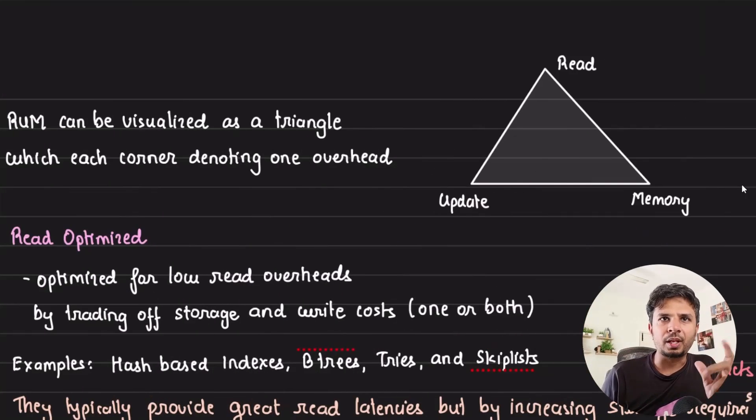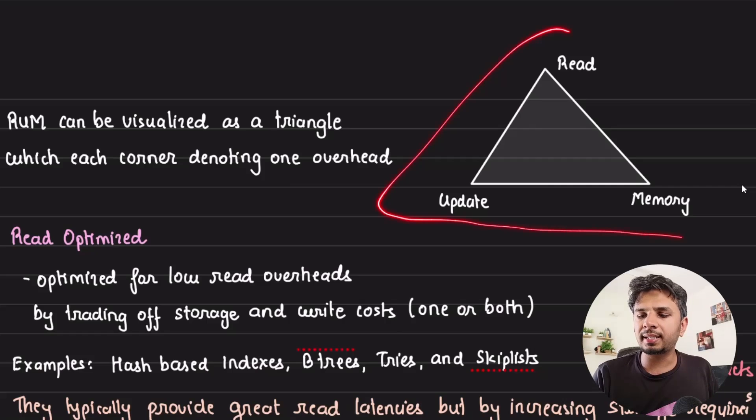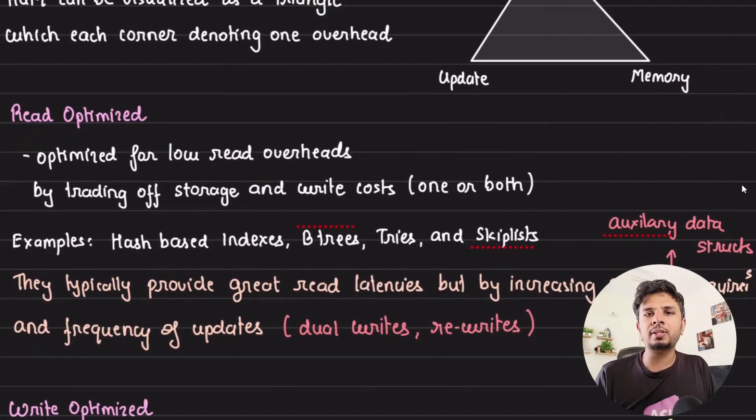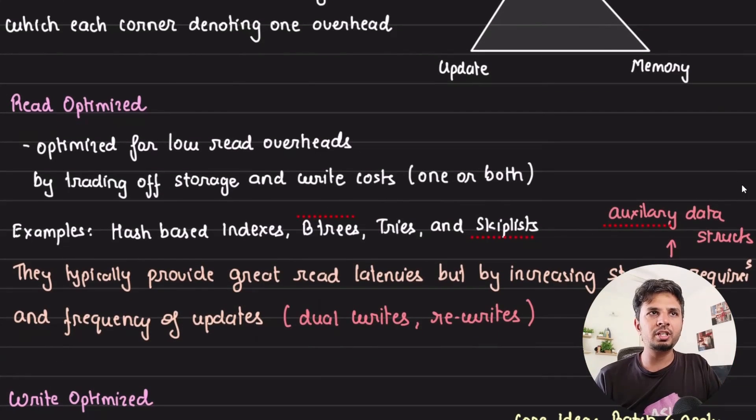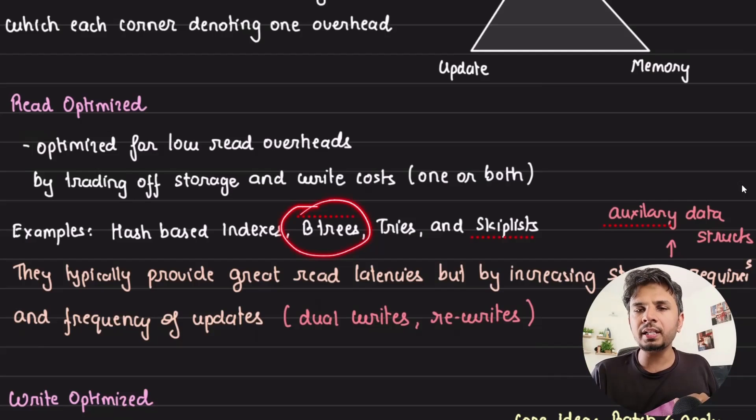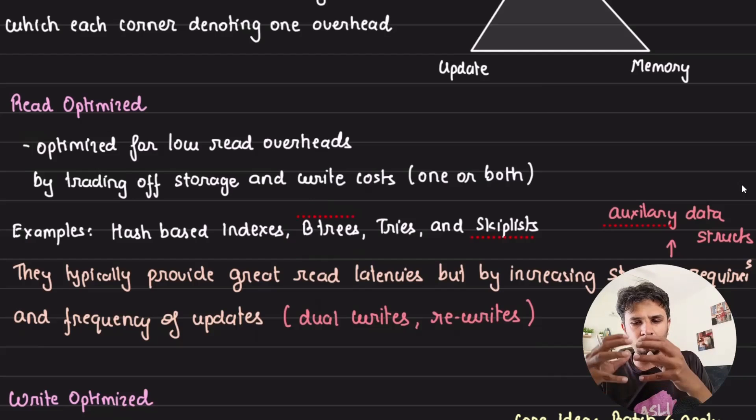When you're visualizing it, it's very easy to visualize it as a triangle. We'll take a look at different databases taking different trade-offs to optimize for a certain type of workload. Let's start with read-optimized workloads. When we talk about databases or data structures which are read-optimized, they're optimized for low read overheads by trading off additional storage and write costs. B-trees, which most relational and many non-relational databases use, are heavily optimized for read.